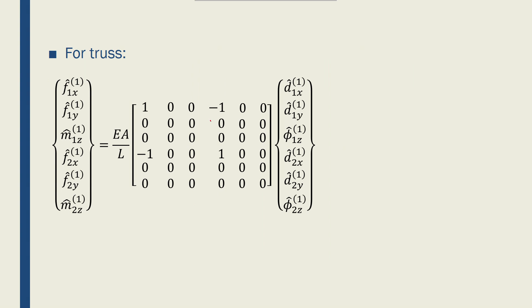First, let's expand the stiffness matrix of a truss. In a truss, I only had F1x and F2x, but I can actually add the F1y and M1z, F2y and M2z, to make this a 6x1 vector.